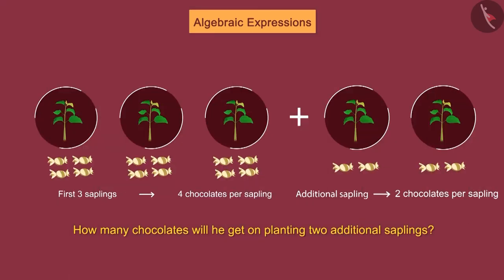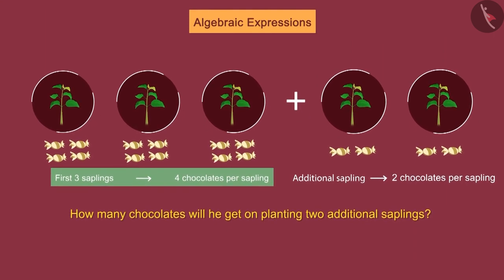We know that on planting first three saplings, he will get four chocolates per sapling. Hence, he will get twelve chocolates for planting three saplings.